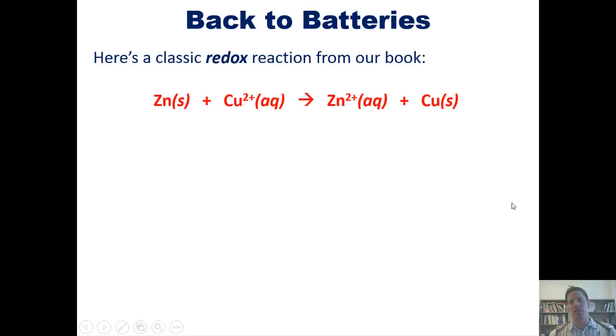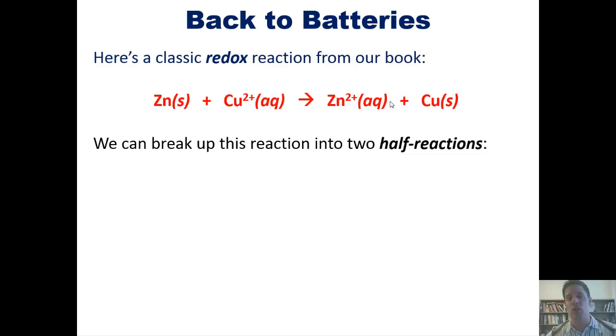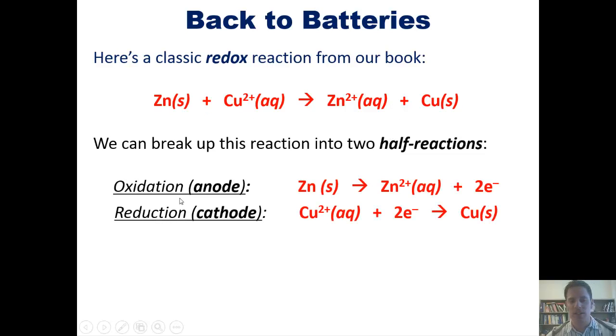So here is a classic redox reaction from our book. As you'll note, zinc goes from being zinc zero to zinc two plus. It's becoming more positive going from left to right, which means that it's losing electrons, which means that it is getting oxidized. In contrast, copper is going from copper two plus to copper zero. It's becoming more negative, which means that it's receiving electrons, which means that it is getting reduced. We can actually separate this reaction into two half reactions as shown here. At the oxidation or anode site, the zinc is getting oxidized to become zinc two plus and spinning out two electrons. Those two electrons in turn get received by the copper two plus to reduce it from copper two plus to copper zero. This is this classic redox reaction.